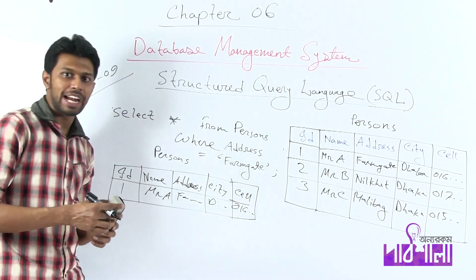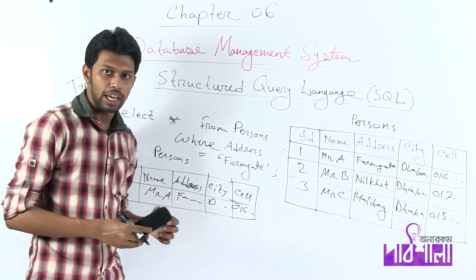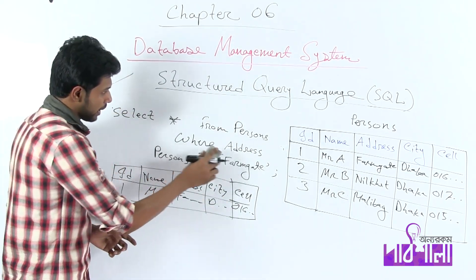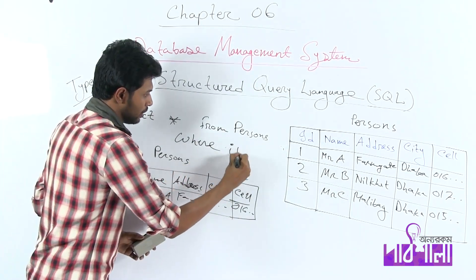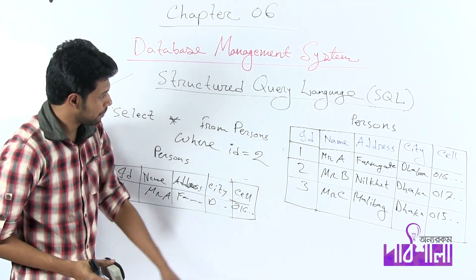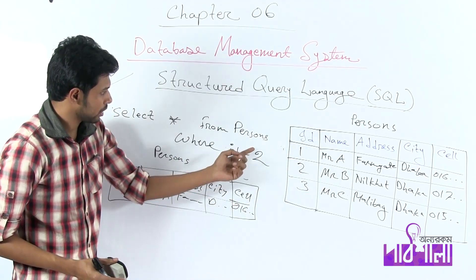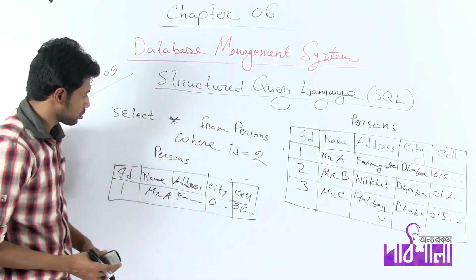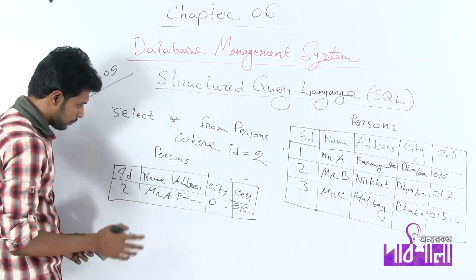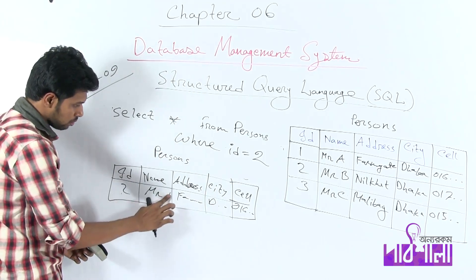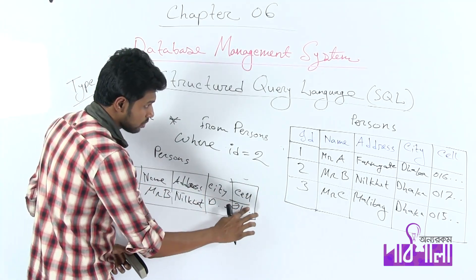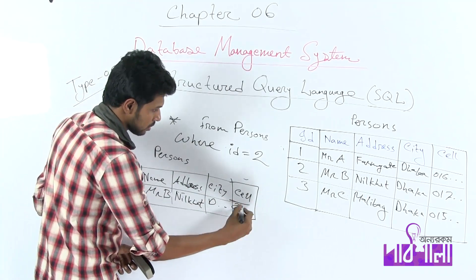If you want to know ID 2, this information is available. Use WHERE ID equals 2. If you have a number type, you do not use quotation marks. So the result shows: ID 2, Mr. B, city, cell number 1016.